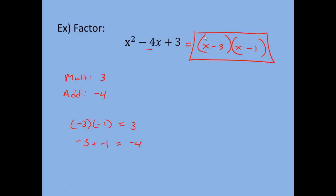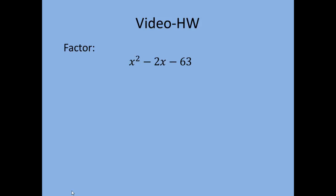You can check this on your own by FOILing. It's important to recognize how we got the signs: things that multiply to a positive number have the same signs, and since they have to add to a negative, both signs are negative. Try the next example on your own.